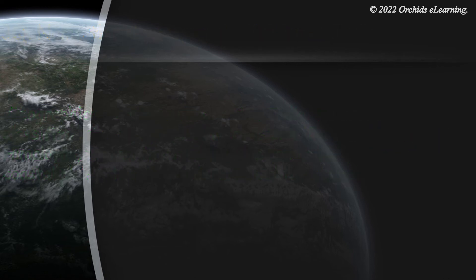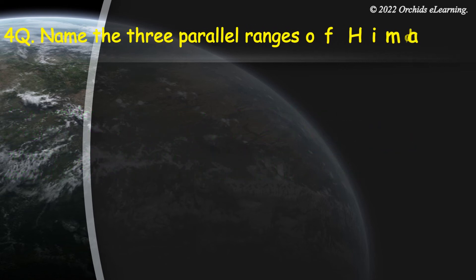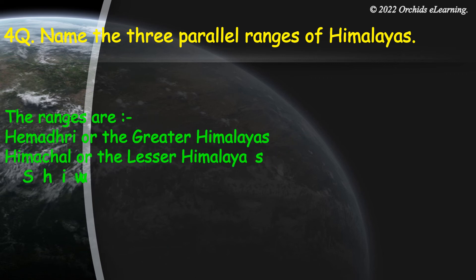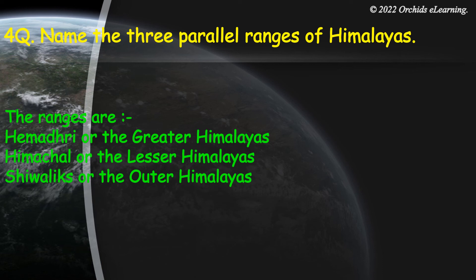Name the three parallel ranges of the Himalayas. The ranges are: Himadri or the Greater Himalayas, Himachal or the Lesser Himalayas, and Shivaliks or the Outer Himalayas.